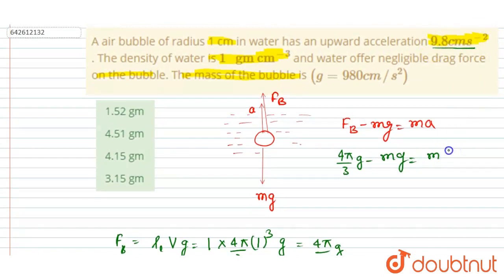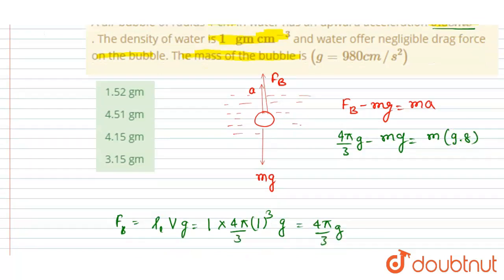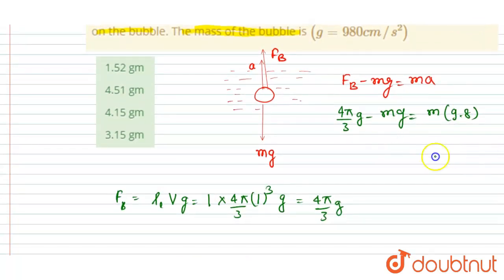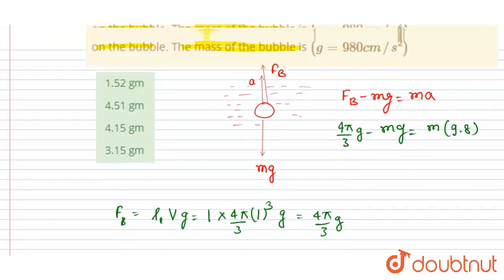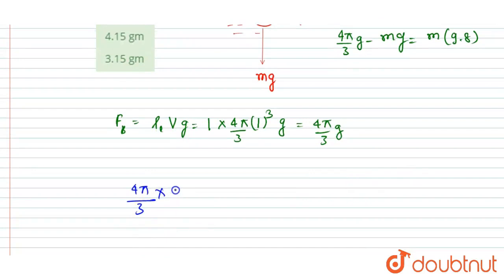So now you can put the value of mg in this equation. So if I write here, I will write here that 4π/3 into g is 980 cm/s² equals mg plus 9.8 times m.